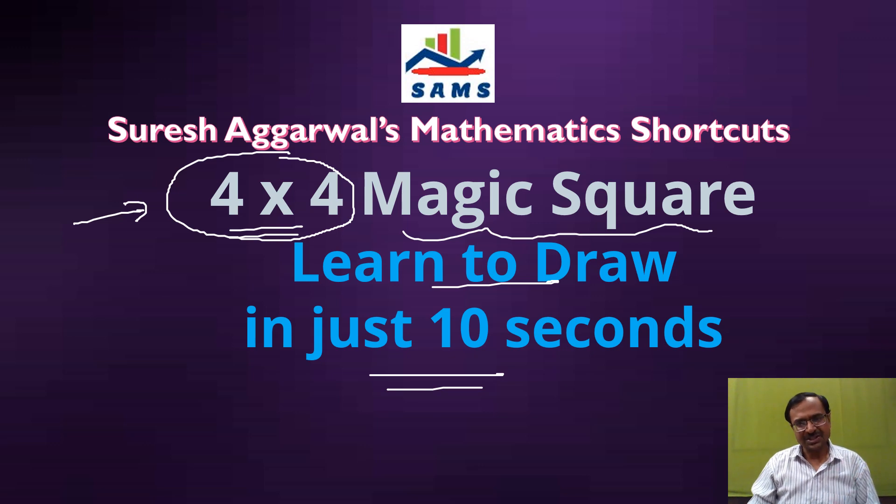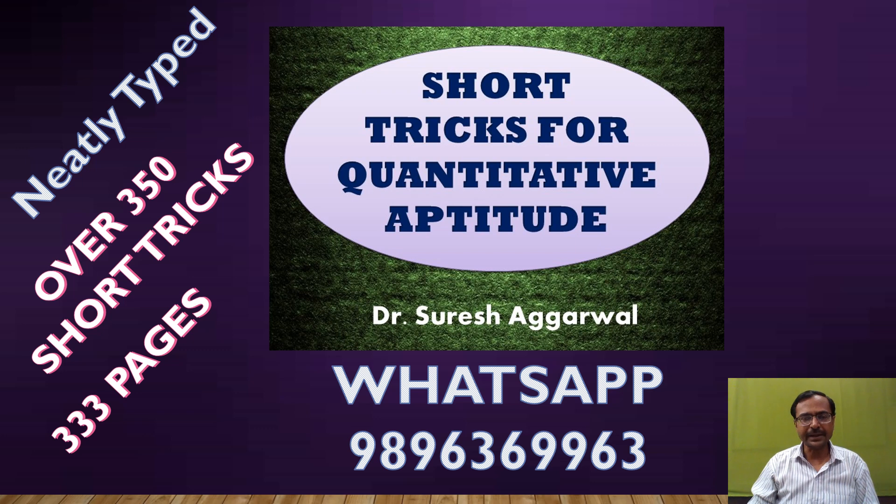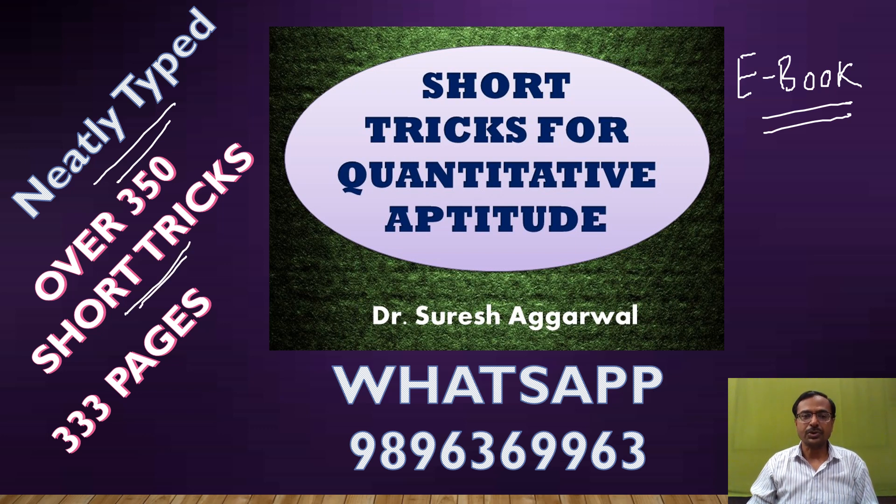Talking of all these magic tricks and short tricks for calculating 10 times faster, this is the exclusive ebook. You will not find this kind of collection of short tricks for quantitative aptitude anywhere on the internet or in print form. This is my own work of so many years, and it's neatly typed now with over 350 short tricks in 333 pages. It's a huge collection of short tricks.